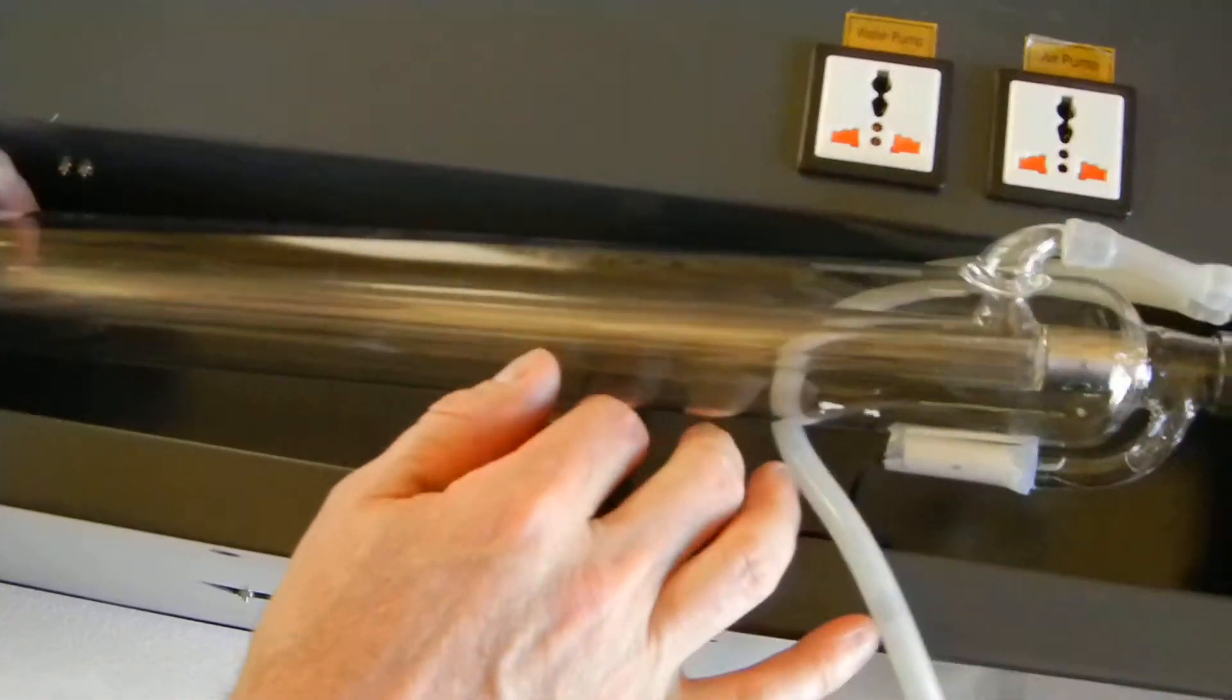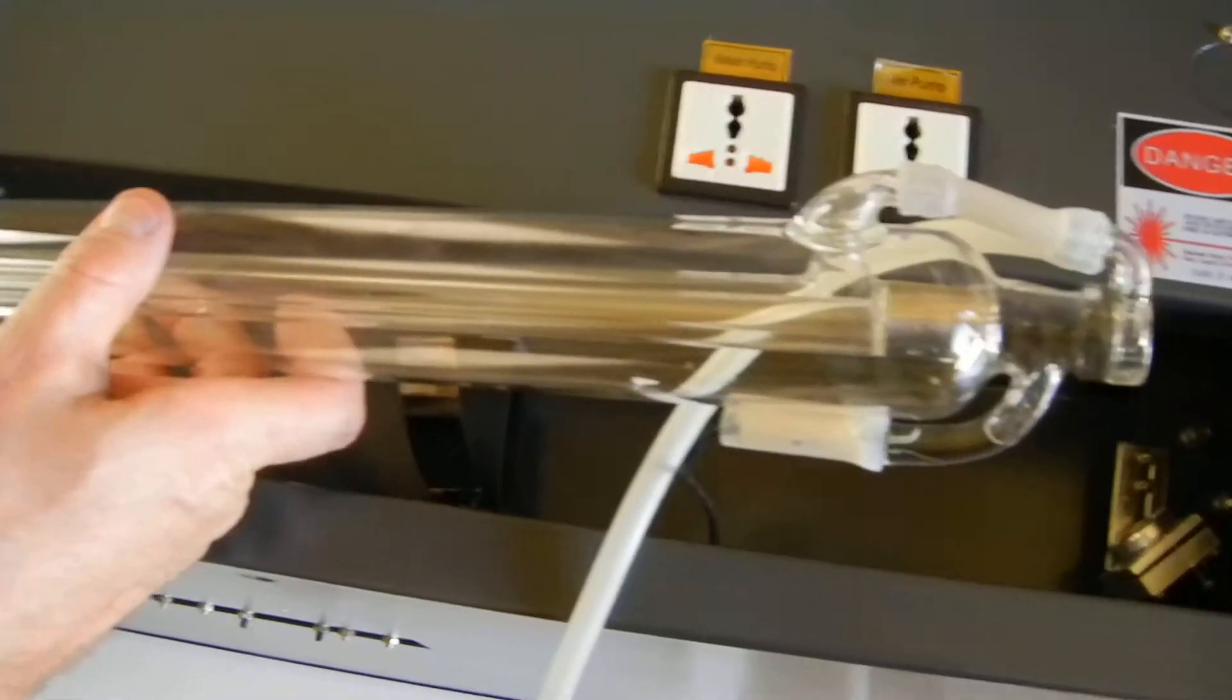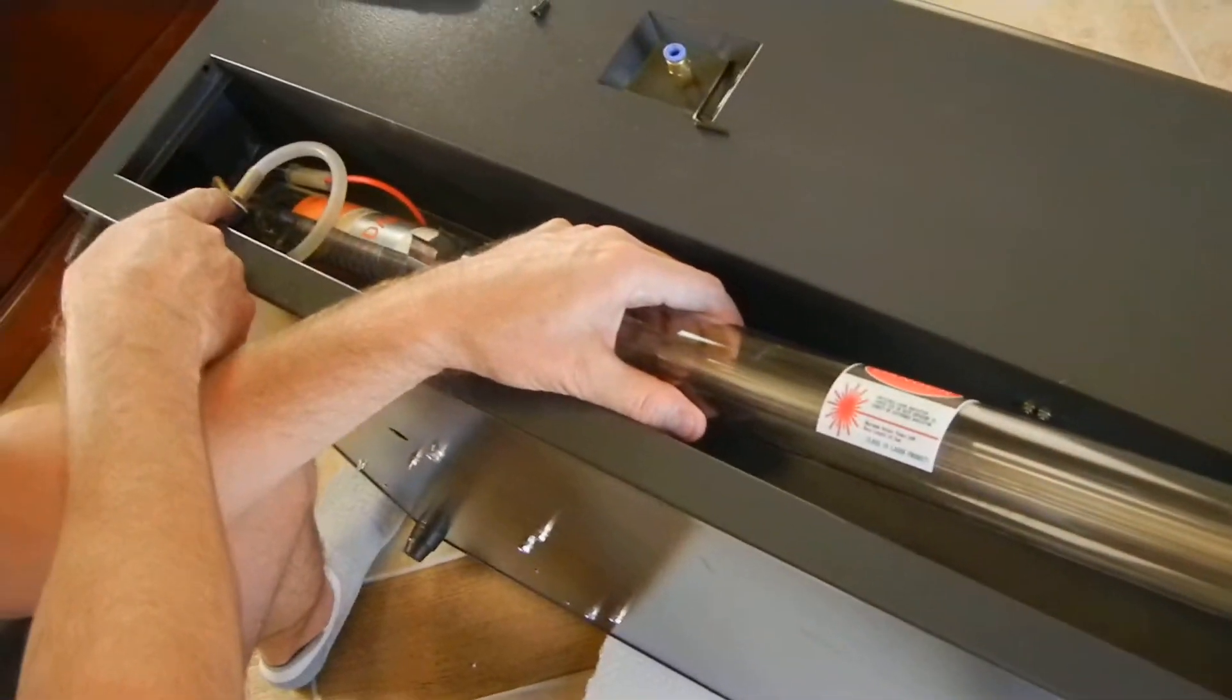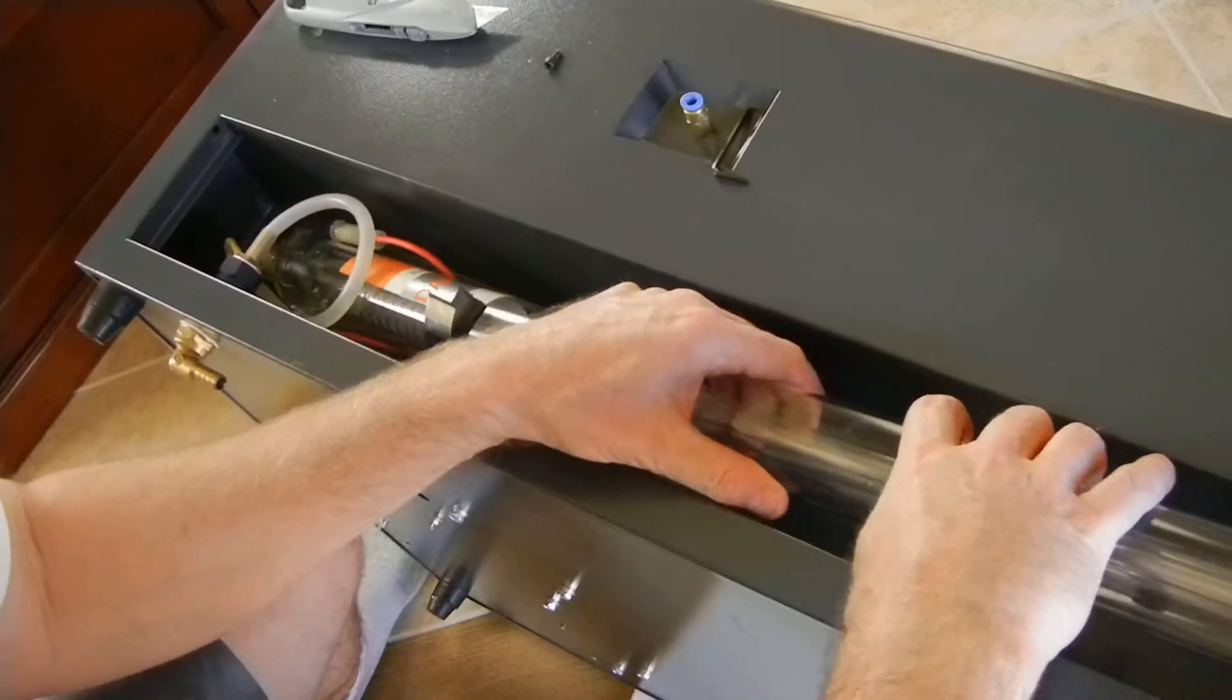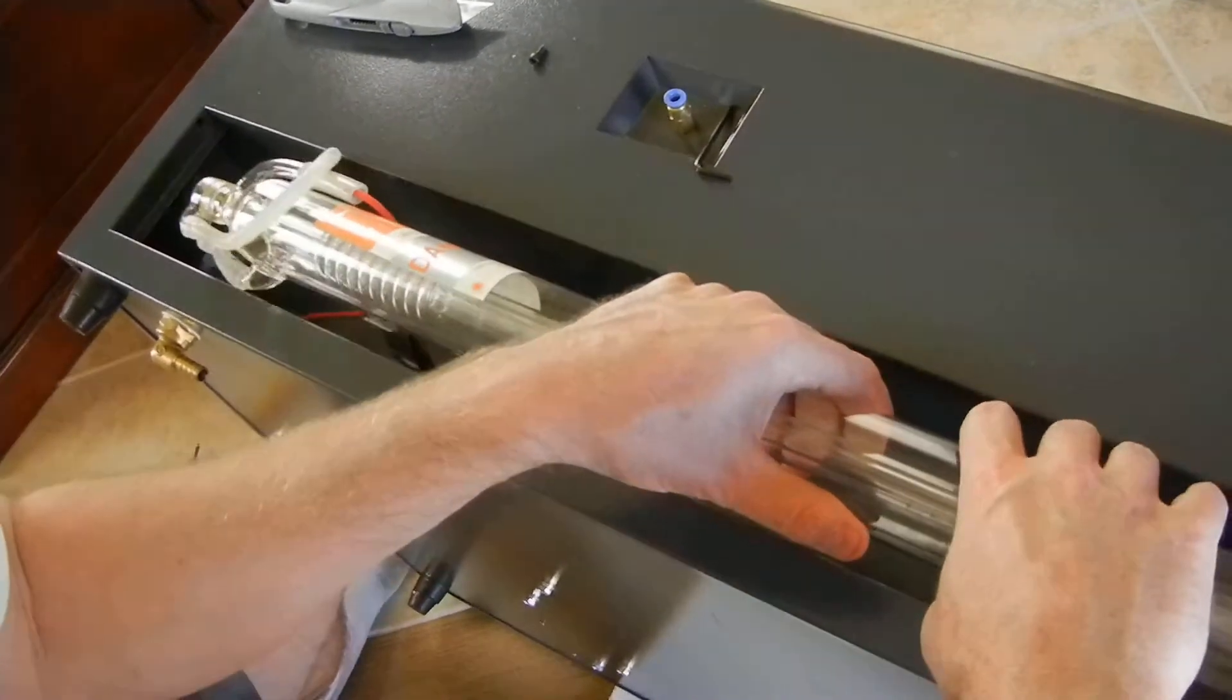Once you get it free from the rubber you can slowly pull it out. You've got to watch on this one here and you need to watch your thing here so you're going to have to pull it out this way to keep from hitting it. Just be very careful with it because obviously it is glass.